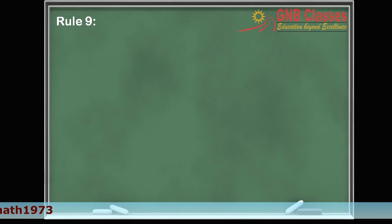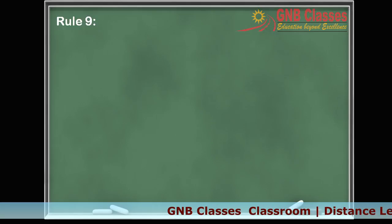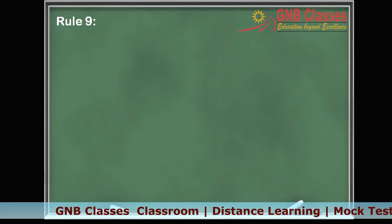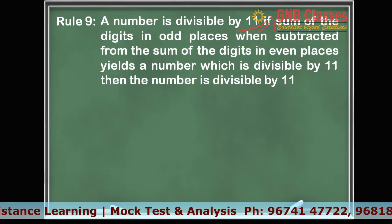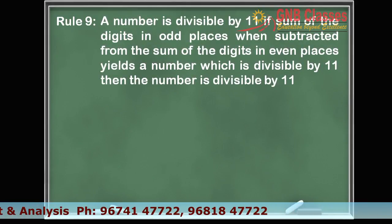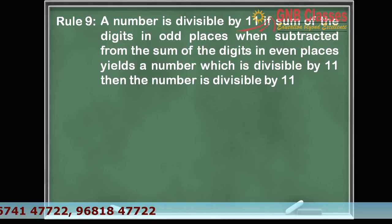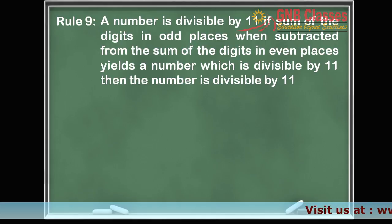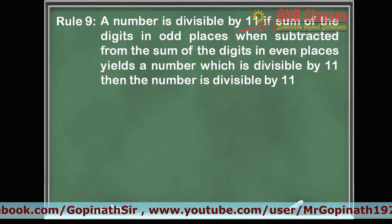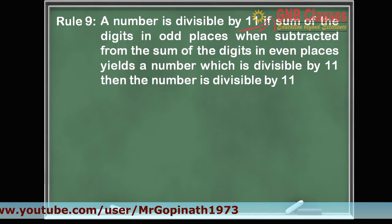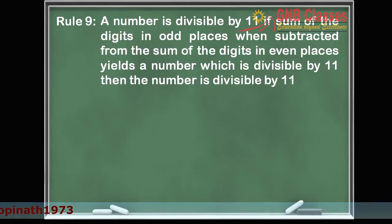Rule 9 speaks about whether a number is divisible by 11 or not. To check this, we add all the digits in the even places and all the digits in the odd places. If we subtract these two sums and the resultant number is divisible by 11, then we say the whole number is divisible by 11.